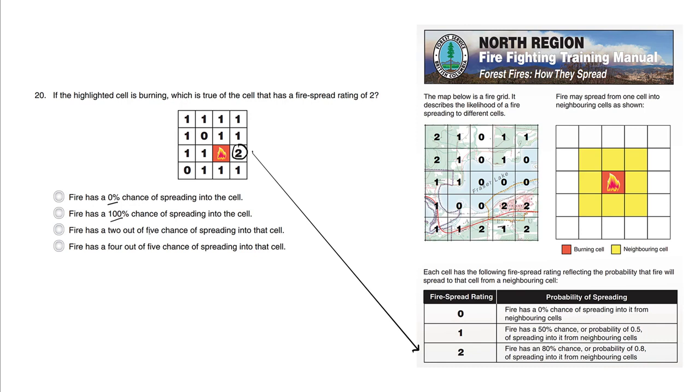Fire has 2 out of 5 chance of spreading to the cell. Now we're talking about 2 out of 5 is the same thing as 4 out of 10 or a 40% chance. Now what we have here is an 80% chance. This is also incorrect.